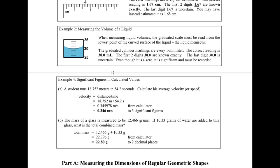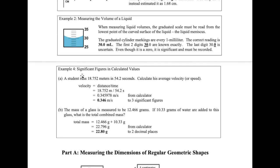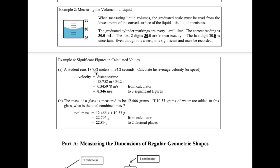One of the most important things about significant figures is using them in calculations — dividing or multiplying measurements that may not have the same number of significant figures. For example, a student runs 18.752 meters in 54.2 seconds. These are measured by different instruments: a meter stick gives 5 significant figures, and a stopwatch gives 3 significant figures, representing a lower precision.